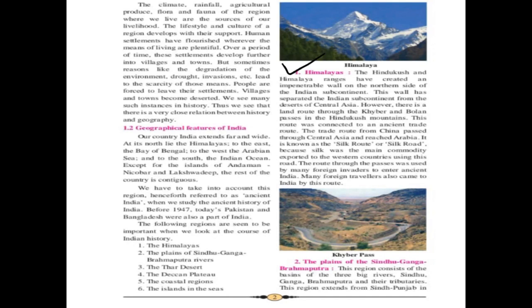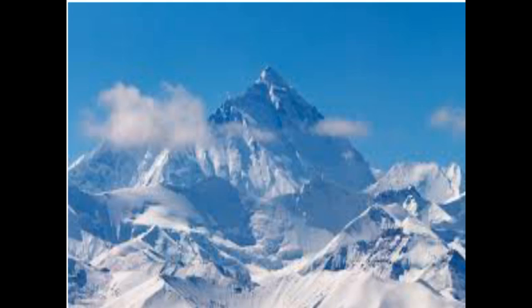The Hindu Kush and Himalayan ranges have created an impenetrable wall on the northern side of the Indian subcontinent. This wall has separated the Indian subcontinent from the deserts of Central Asia. The Himalayas are the highest mountain range in Asia, separating the plains of the Indian subcontinent from the Tibetan plateau. This mountain range covers approximately 2400 km and passes through India, Pakistan, Afghanistan, China, Nepal, and Bhutan.